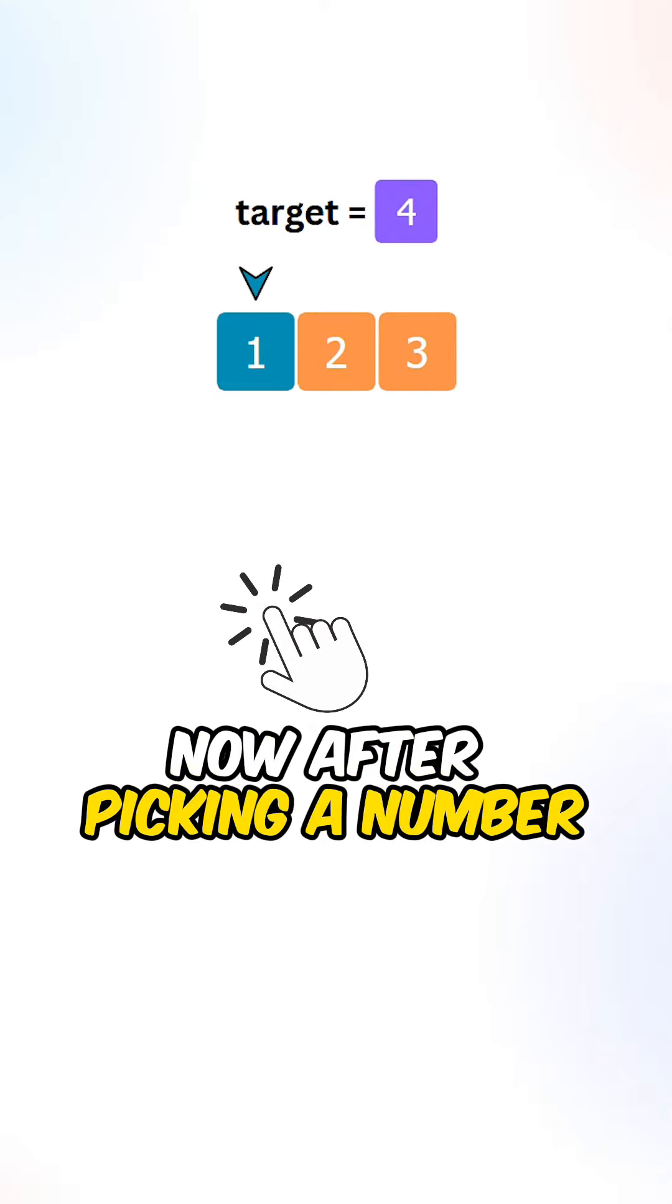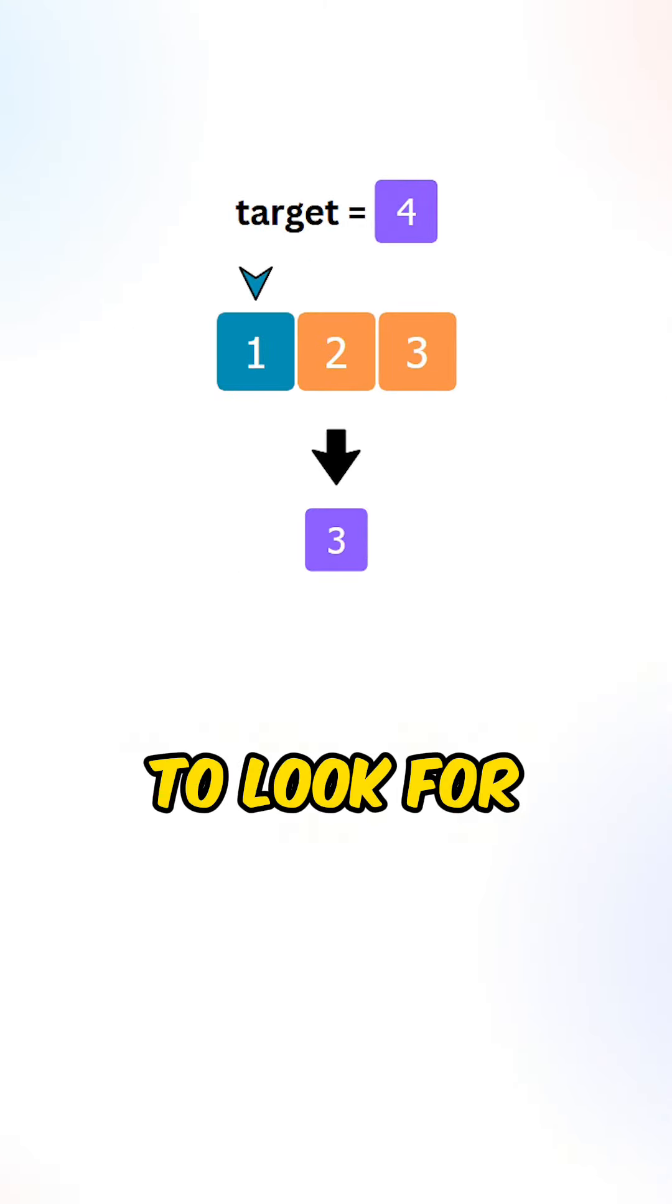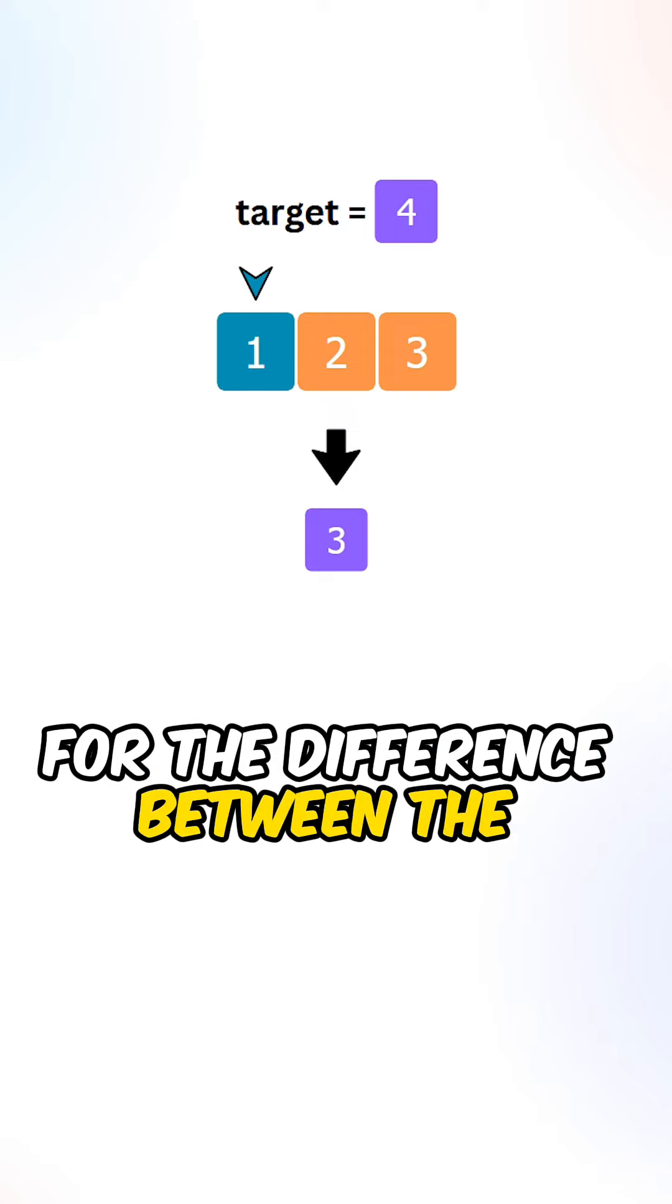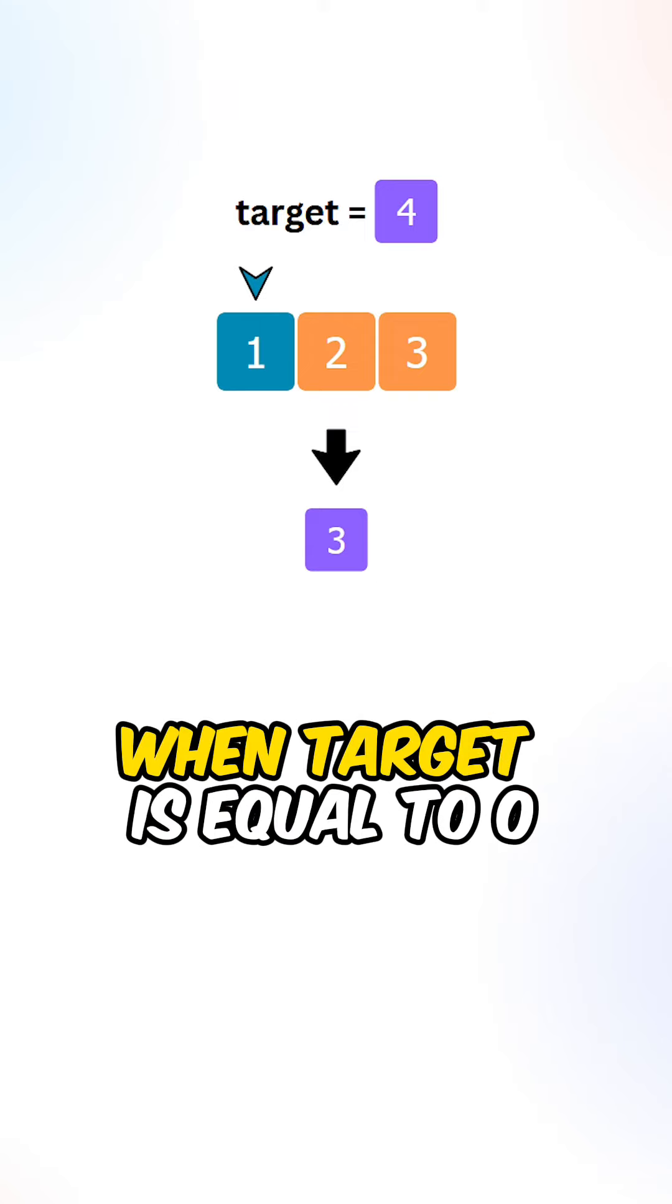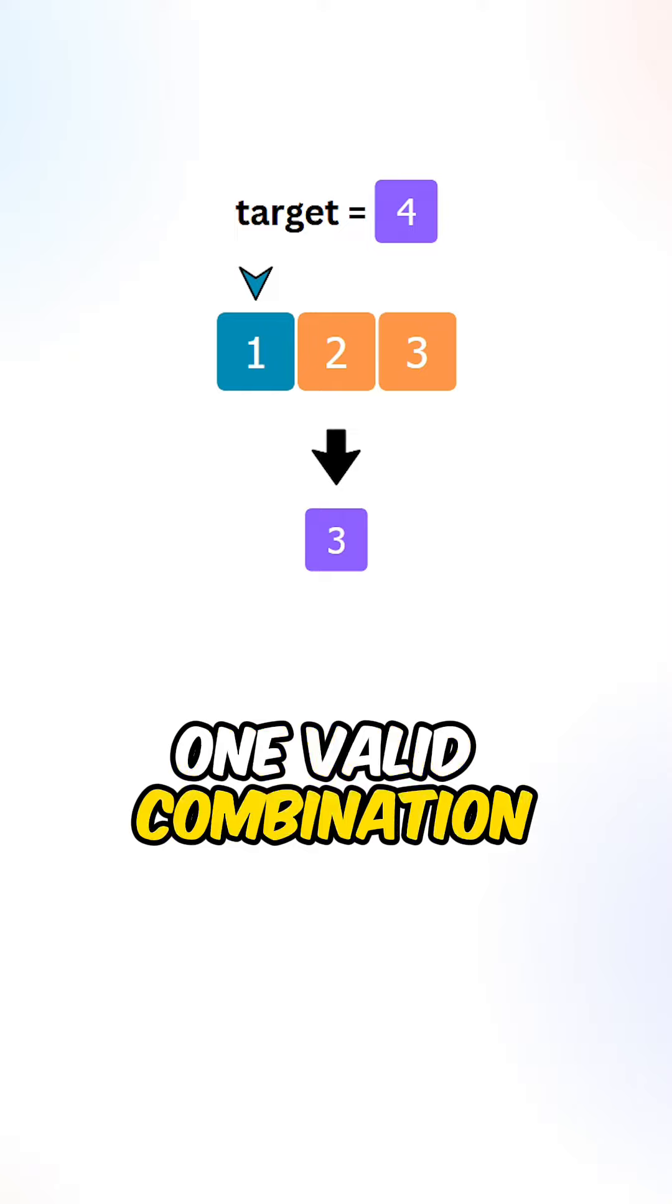Now, after picking a number, we will need to continue to look for the number of combinations for the difference between the target and the number. When target is equal to 0, we have found one valid combination.